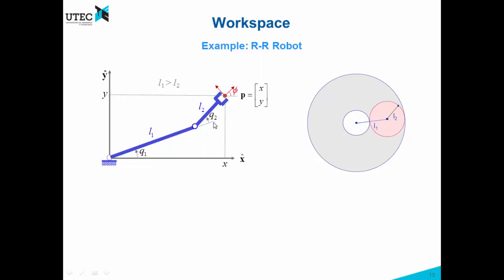Q1 is this — let's fix it and just move Q2. So if we move Q2, this point is basically going to perform a circle, which is the circle that you observe here. Now we will move Q1, and at every possible position of Q1 we will have a circle, and at the end we will have all this gray area that you see here. So that gray area is the workspace of this robot.